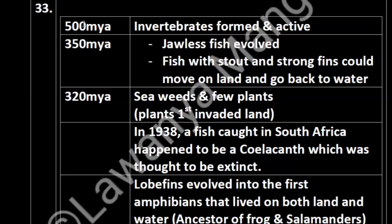Now here is a timeline table of important evolutionary milestones: 500 million years ago — invertebrates formed. 350 million years ago — jawless fish evolved, and fish with stout and strong fins could move on land and go back to water. 320 million years ago — seaweeds and few plants were discovered. Most importantly, plants were the first organisms to invade land.